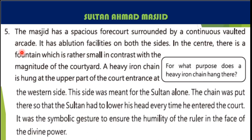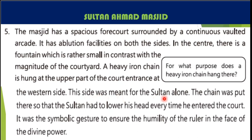A heavy iron chain is hung at the upper part of the court — bhaari lohe ki zanjeer — at the western entrance side of the court. This side was meant for the sultan alone. Only the sultan was permitted to enter from this side — nii baadshah.